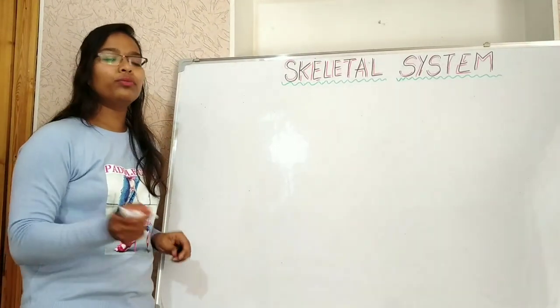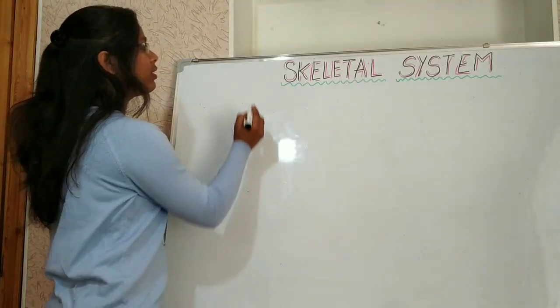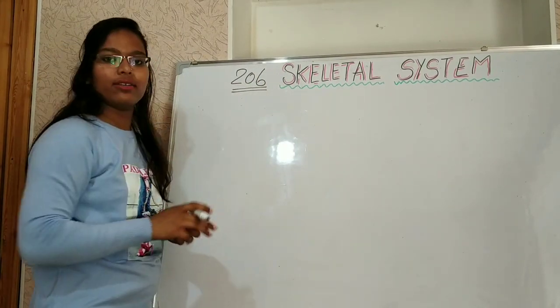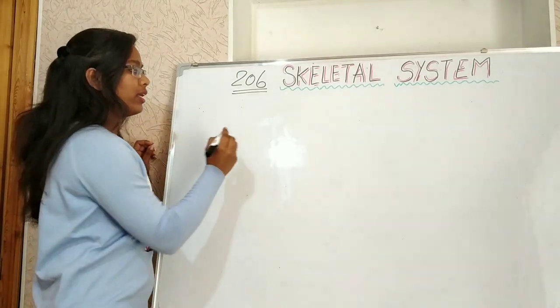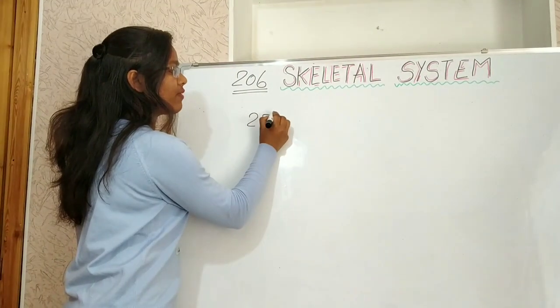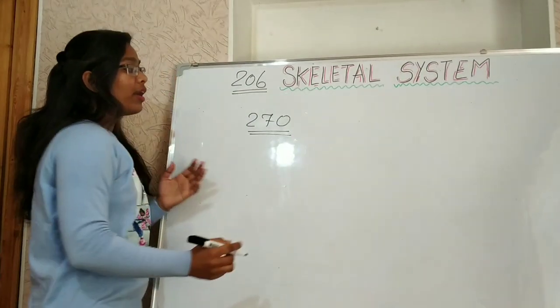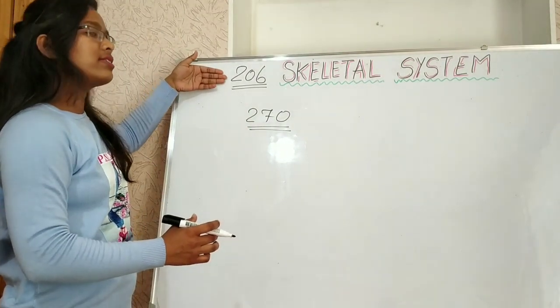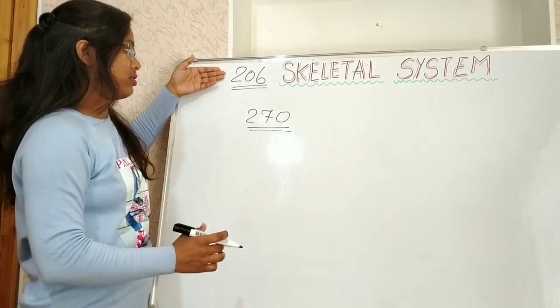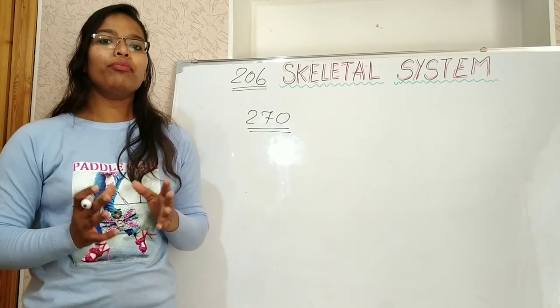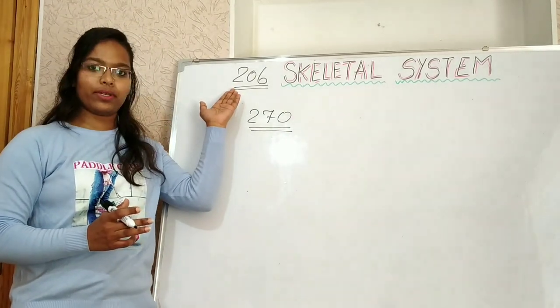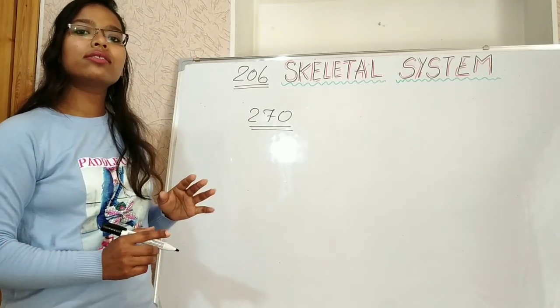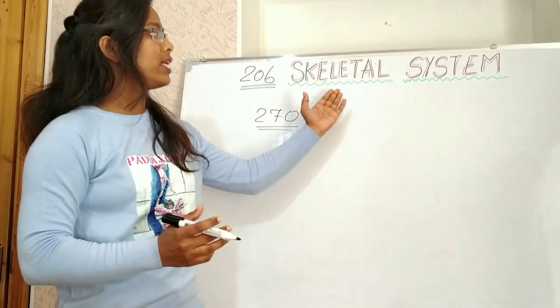So total we have 206 bones in adults. But at the time of birth we have 270 bones. These 270 bones get fused to form 206 bones in adults. Mainly we prefer adults for study purpose, so we will prefer 206 bones in adults and we are going to study easy flowchart.